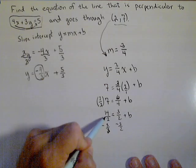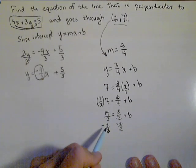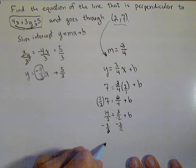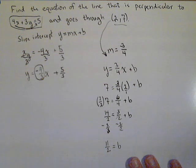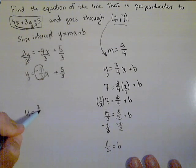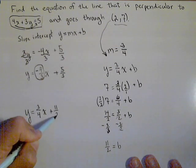So we have 14 halves minus 3 halves. They'll cancel here. So 14 minus 3 is 11 because we have our common denominator. So 11 halves is our b. So our equation in slope intercept form is y equals 3 fourths x plus 11 halves.